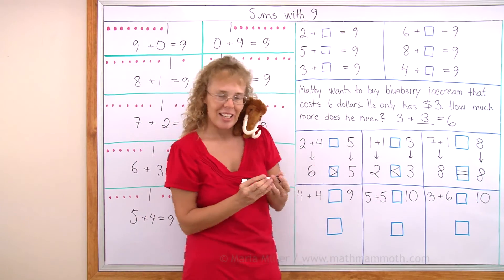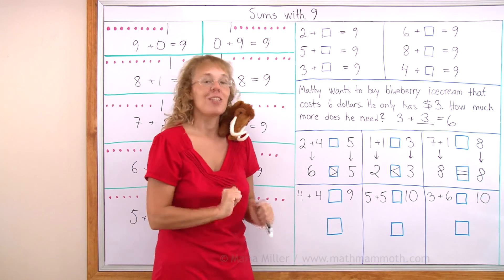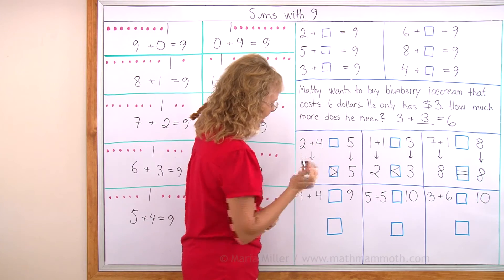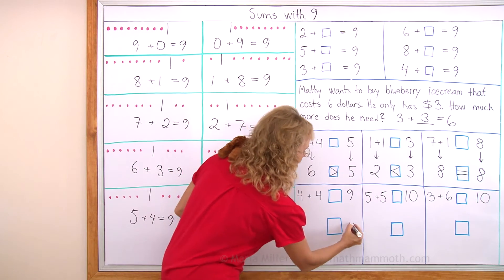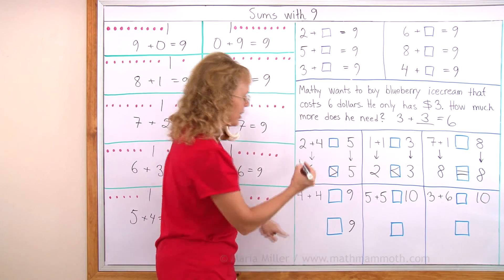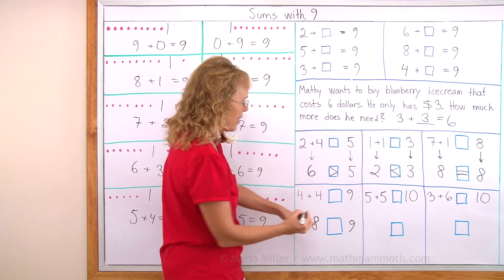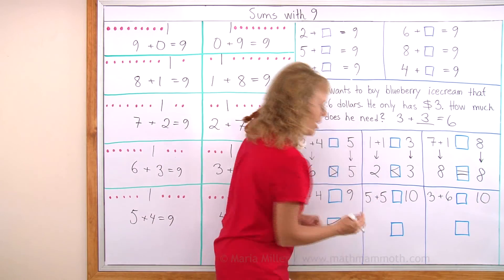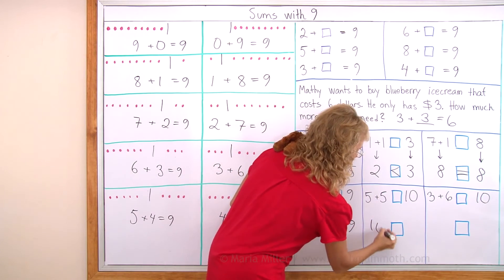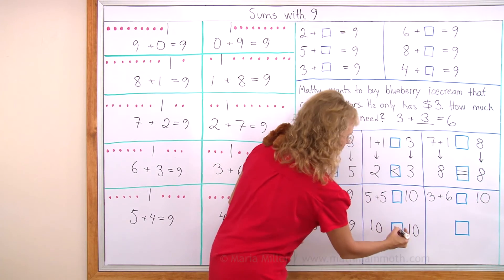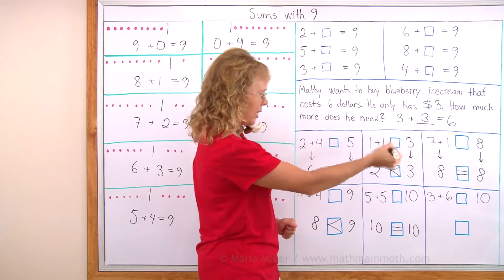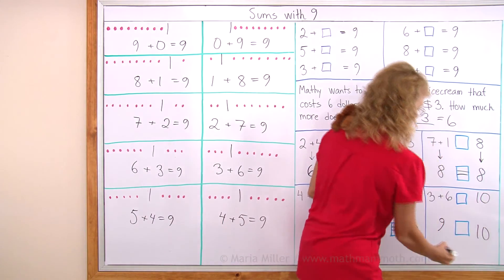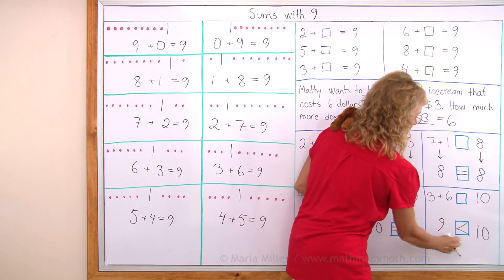Over here, so we have to solve this problem. Try to solve this last 3 problems on your own. Pause the video for a little bit. Okay, let's solve them together. I'll copy 9 here. 4 plus 4 is 8, and so 8 is less than 9. Over here, 5 plus 5 is like your fingers, 5 and 5, 10. And that's 10 I copy. 10 equals 10. And 3 plus 6 is 9, and that's 10. And so 10 is more. We have 9 is less than 10.